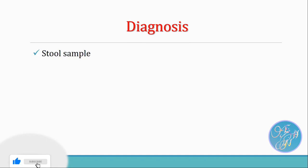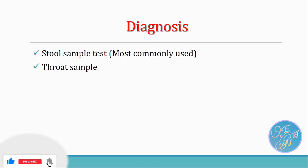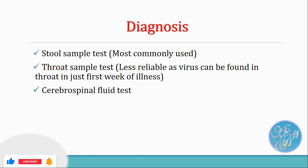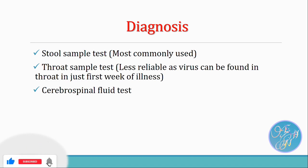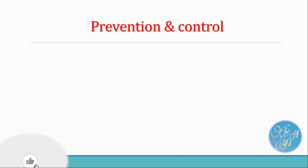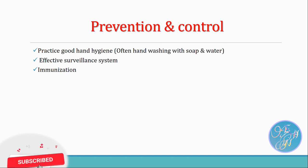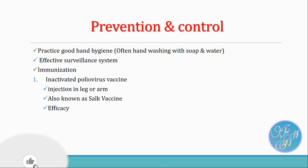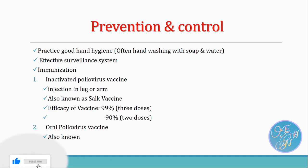Polio is a preventable disease. It can be prevented by maintaining good hand hygiene, an effective surveillance system, and immunization. Basically, two types of vaccines are used. The first is IPV — Inactivated Poliovirus Vaccine, administered by injection in the leg or arm, also known as the Salk vaccine. This vaccine is considered highly effective: two doses provide 90% protection while three doses provide 99% protection against polio. The second vaccine is the Oral Poliovirus Vaccine, also known as the Sabin vaccine.